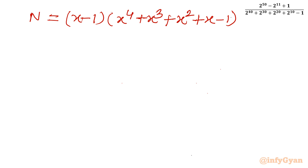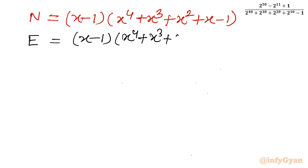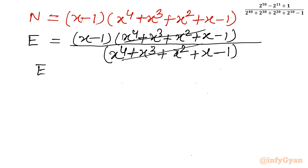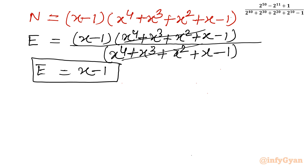Now let's put the factored numerator back into the expression E. E equals (x minus 1) times (x power 4 plus x cubed plus x squared plus x minus 1), divided by (x power 4 plus x cubed plus x squared plus x minus 1). The common bracket cancels, leaving E equal to simply x minus 1. Substituting back x equals 2 power 10, we get E equals 2 power 10 minus 1.